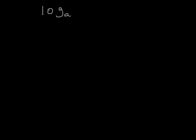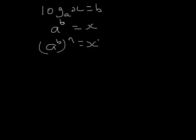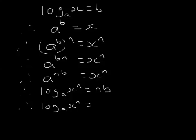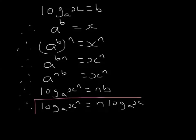Now let's look at the third log rule that we need. Start off with log to the base a of x equals b, so a to the power of b equals x. I'm now going to raise each side to the power n. The rules of indices state that a to the b, to the power n, is a to the power bn. And because bn is the same as nb, the third log rule is: log to the base a of x to the power n equals n times log to the base a of x.